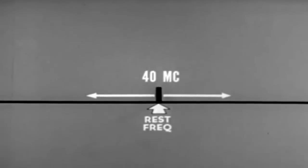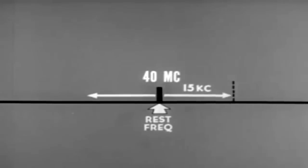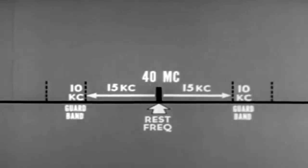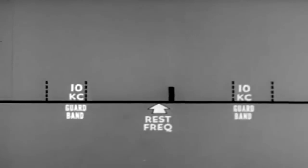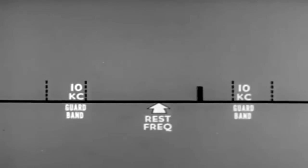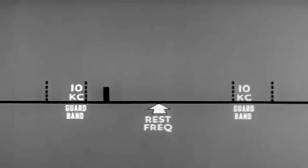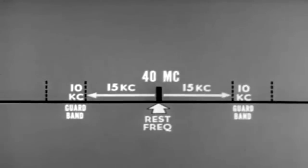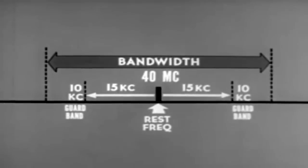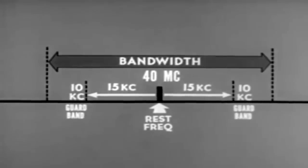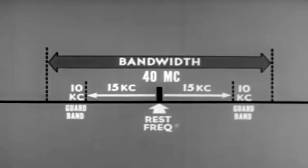A typical amount of room might be 15 kilocycles above rest and 15 kilocycles below rest. To avoid conflict with adjacent FM channels, 10 kilocycle guard bands are added on each end. This typical channel will allow the carrier a 15 kilocycle deviation above and below its rest frequency. Adding the 10 kilocycles on each end for guard bands, the total bandwidth is 50 kilocycles. The 50 kilocycle bandwidth is not a standard — all FM transmitters do not have the same deviation. It will vary in accordance with the equipment's design and mission, but the principles under study apply to any and all FM transmitters.